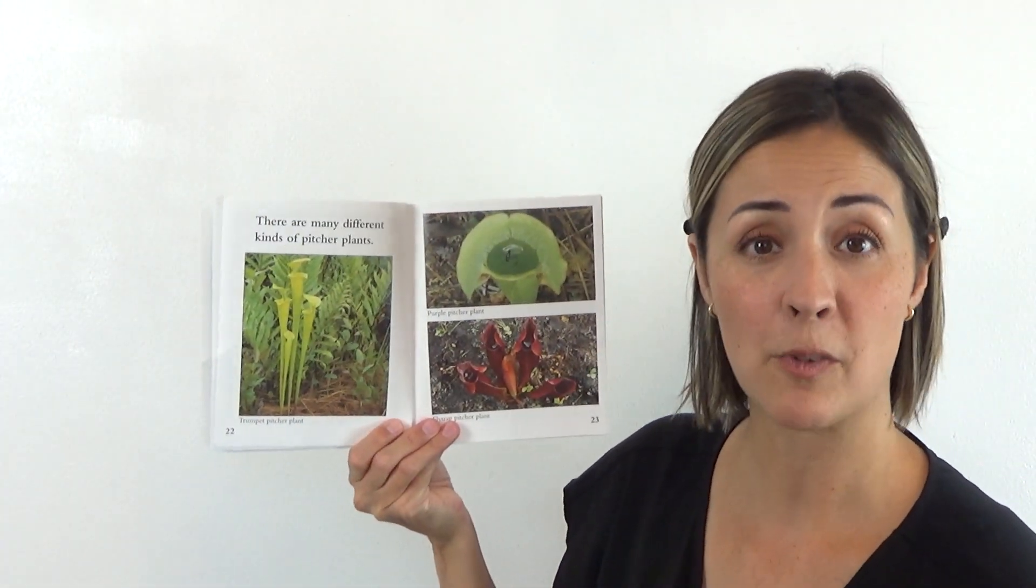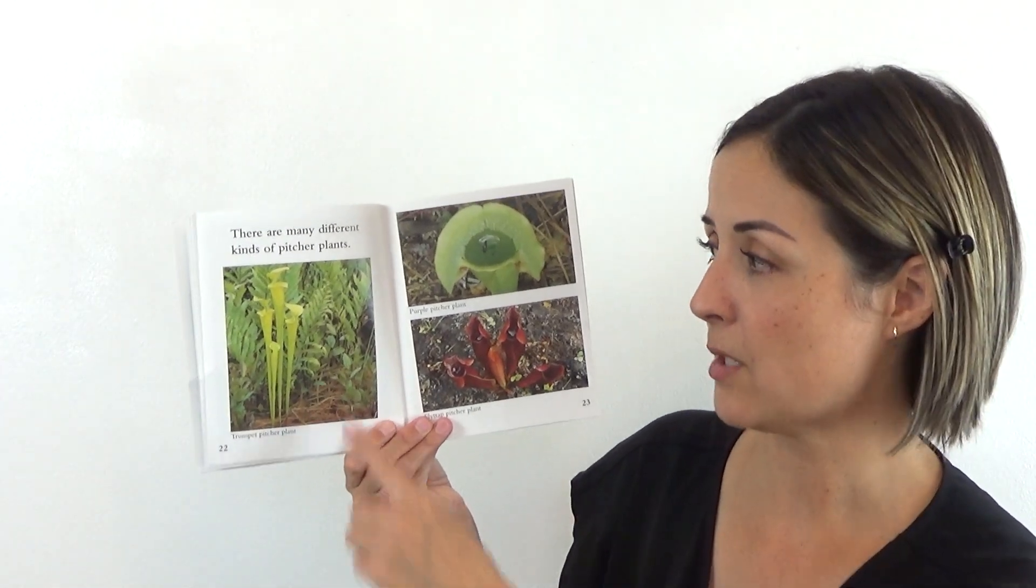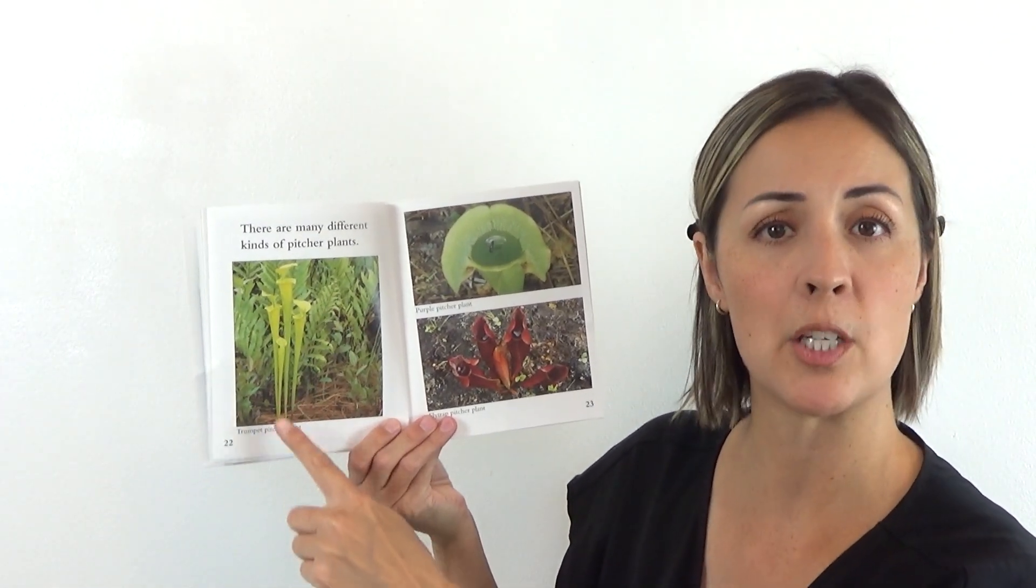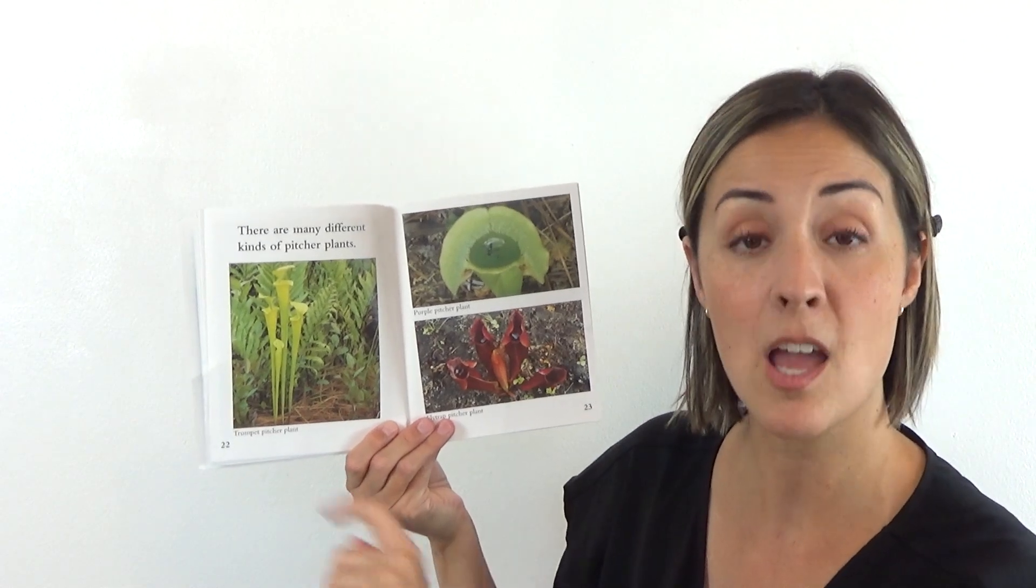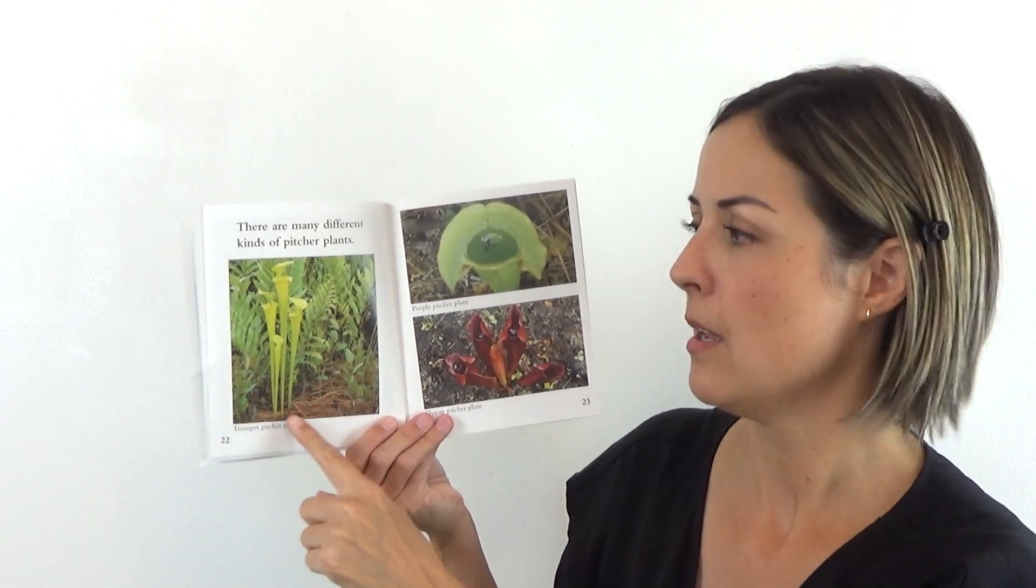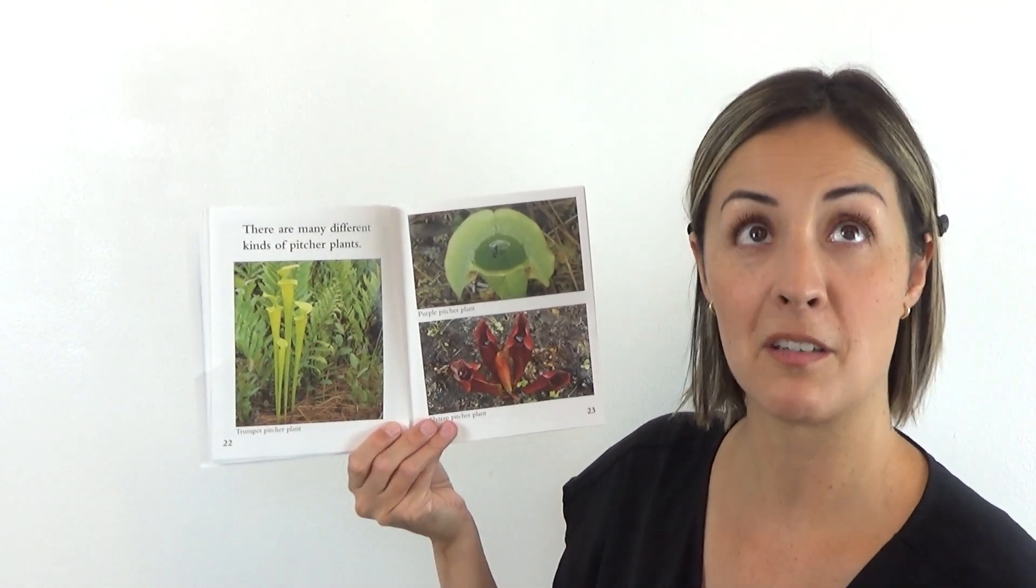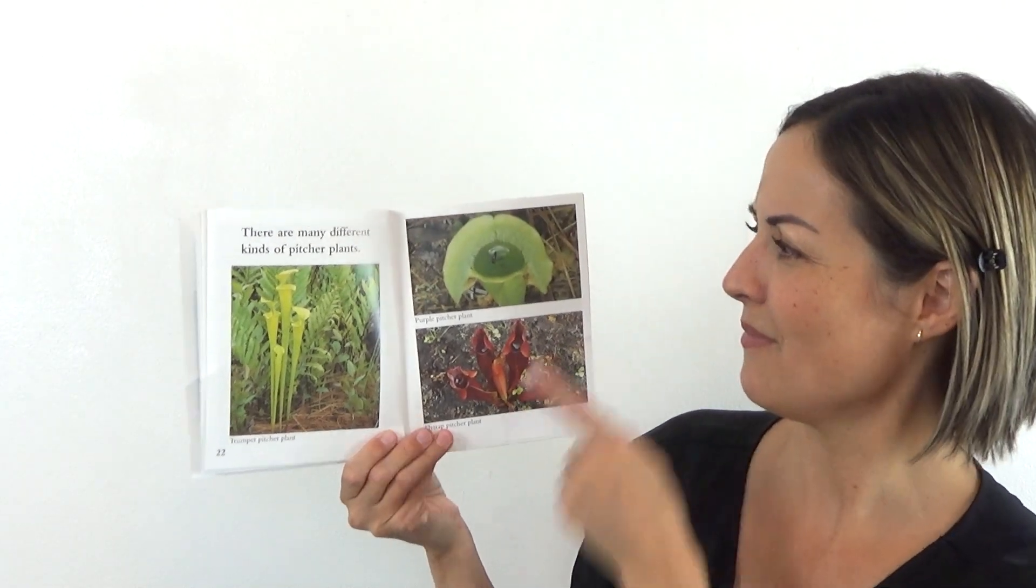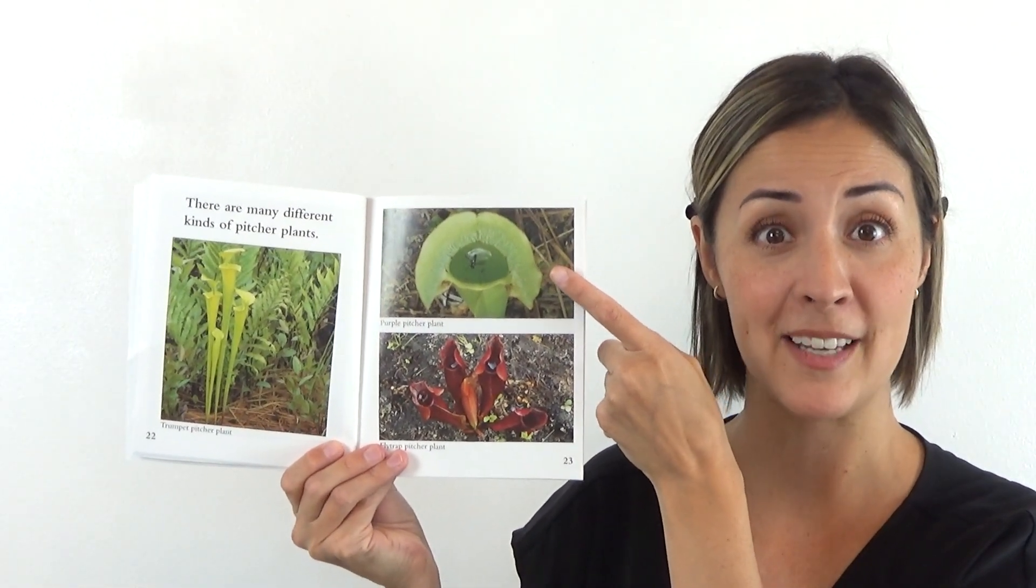There are many different kinds of pitcher plants. This first one is called a trumpet pitcher plant. Can you say that? It's a trumpet pitcher plant. Yeah, because it looks like an instrument called a trumpet. This one is called a purple pitcher plant. Can you say it?